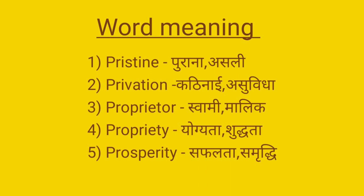Next word hai 'privation'. Privation ka matlab hota hai kathinai ya asubida — hardship or difficulty. Next word hai 'proprietor'. Proprietor ka matlab hota hai swami, malik — owner or master.